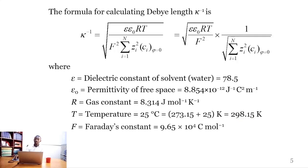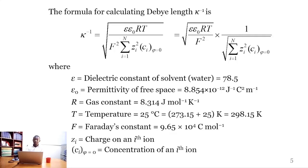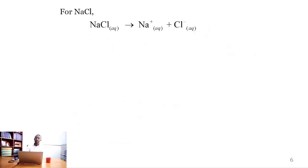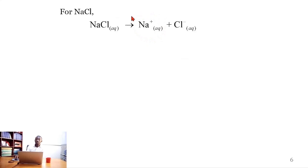F is Faraday's constant, which has this value. Z_i is the charge on an ion, and C_i at φ=0 is the concentration of an ion at the point where the potential is zero. For sodium chloride, sodium chloride dissociates completely in solution into sodium ions and chloride ions. One mole of sodium chloride gives one mole of sodium ion and one mole of chloride ion, so the concentration of sodium chloride equals the concentration of both the sodium ion and the chloride ion in solution.